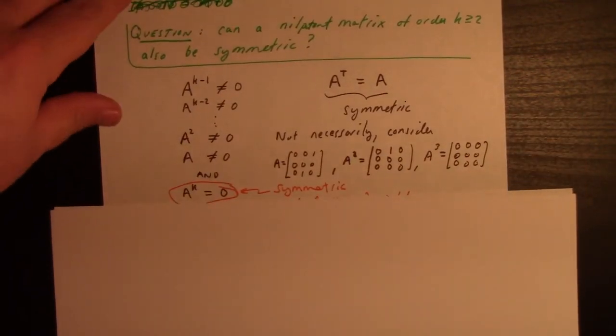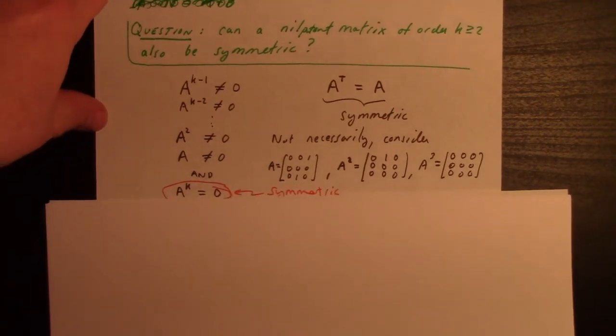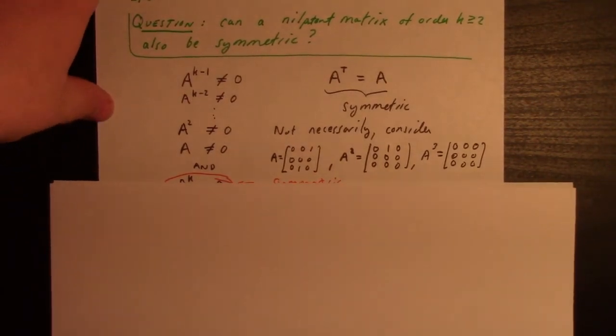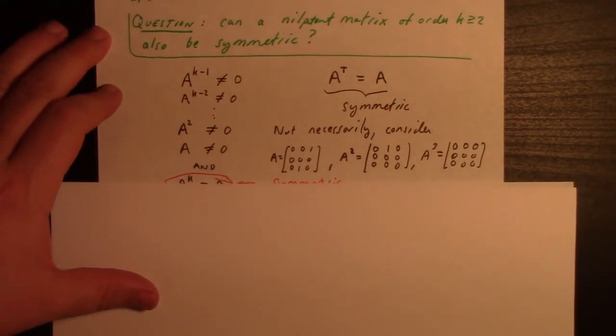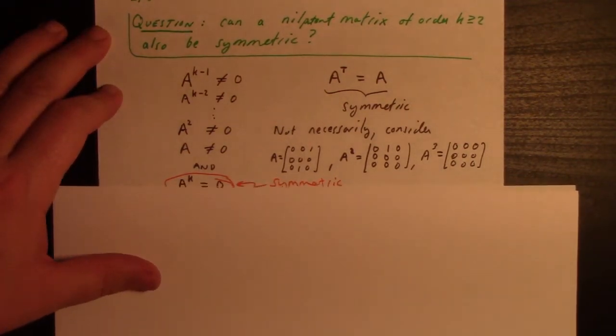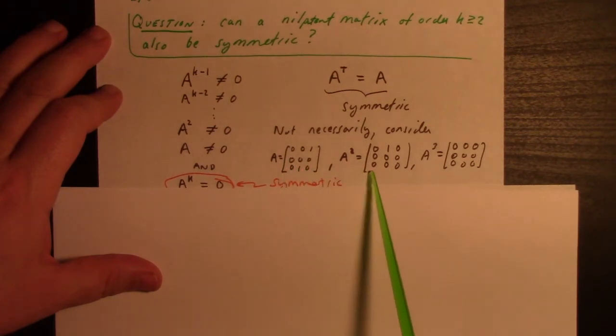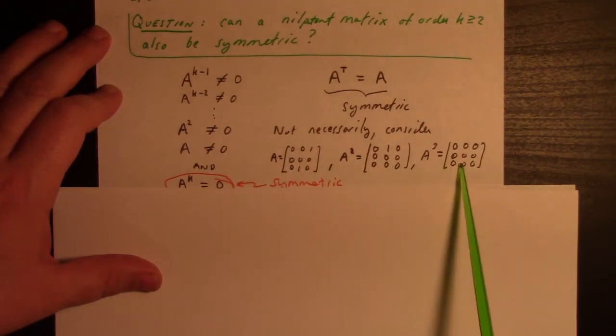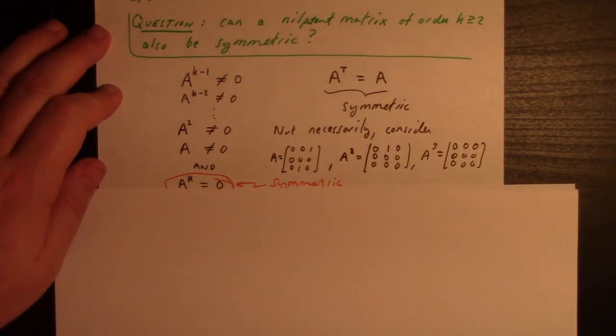Finally, can a nilpotent matrix also be symmetric? I think probably not, but here's an example. If A is this matrix, then A squared is this, A cubed is that, so it's nilpotent of order three. As you can see, this is not symmetric.